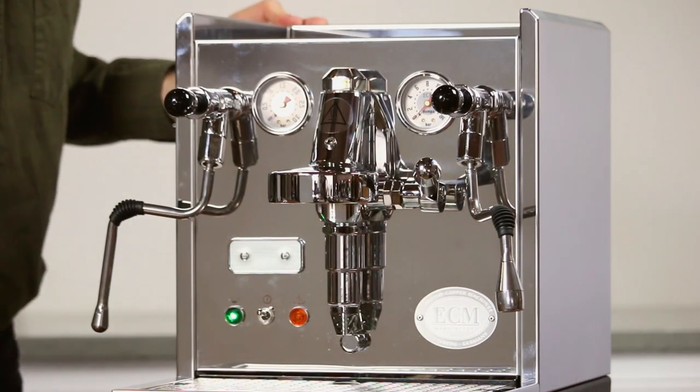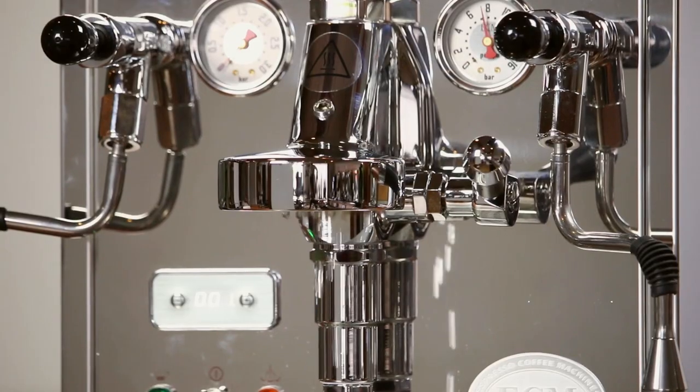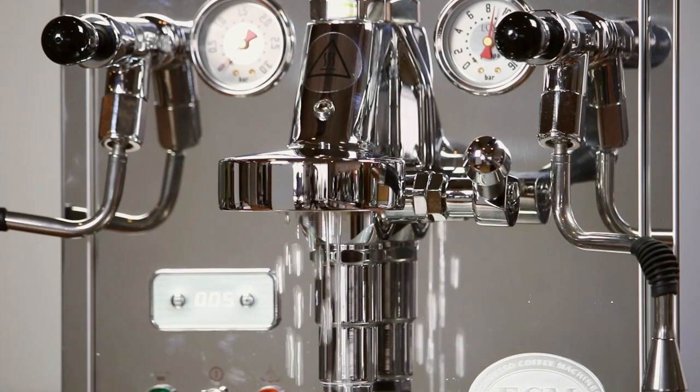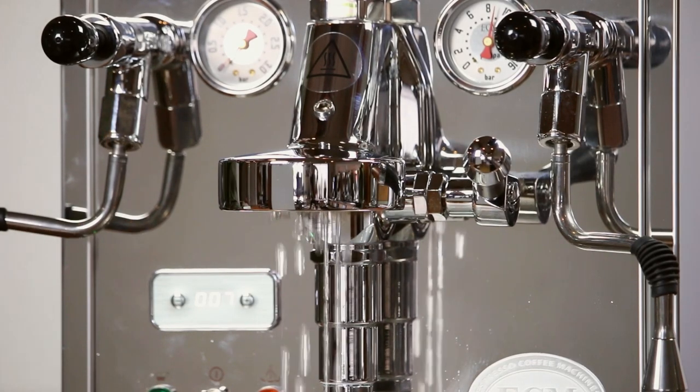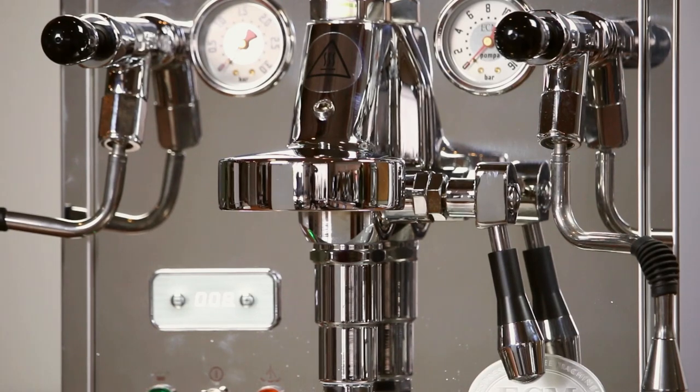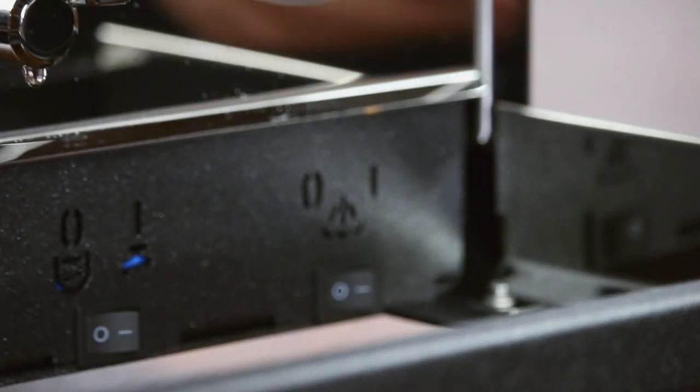This will activate the pump and fill the brew and steam boilers. After a short period, you'll start to see water coming through the group head. Once 4 ounces of water moves through the group, lower the brew lever to turn off the pump. To activate the steam boiler, turn on the steam boiler switch located behind the drip tray.